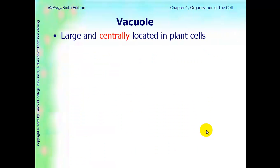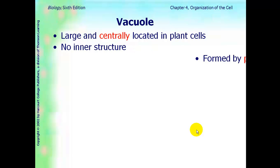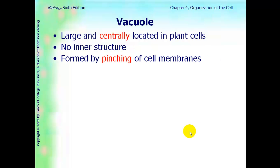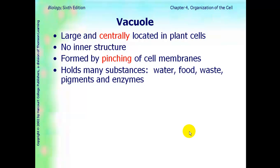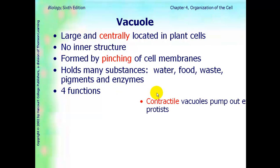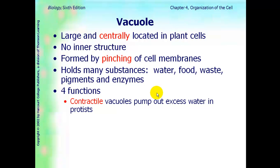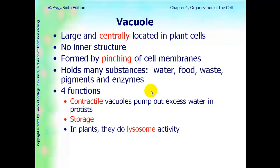Next organelle is the vacuole. In plant cells, it's very large and in the center. There's no inner structure for a vacuole. They're formed by the pinching of the cell membrane, and their main function is storage — they can store water, food, waste, pigments, and enzymes. There are four functions of the vacuole: the contractile vacuole pumps out excess water in protists; second is storage; in plants they can also do lysosome activity, breaking down proteins, nucleic acids, and lipids; and they also maintain hydrostatic pressure in plants.